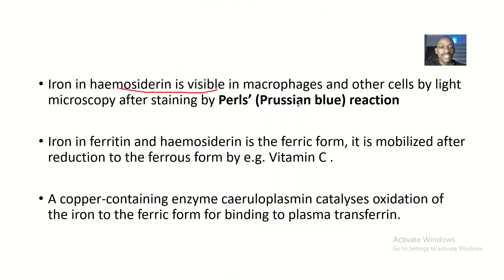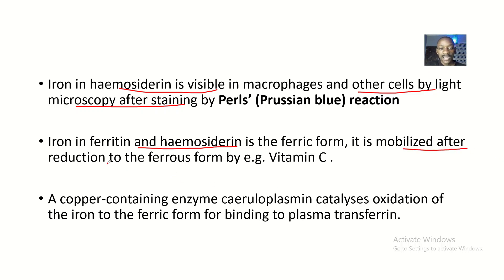Iron in hemosiderin is visible in macrophages and other cells by light microscopy after staining by Perls' reaction, also called Prussian blue. Iron in ferritin and hemosiderin is in the ferric form, that's Fe³⁺. It is mobilized after reduction to the ferrous form by Vitamin C, which triggers the conversion of iron from the ferric to the ferrous form.